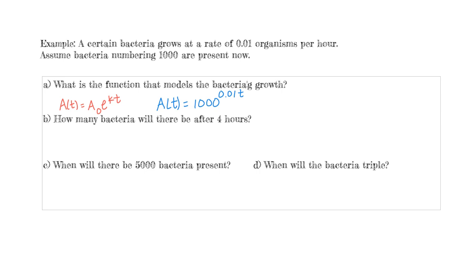For part B, it asks how many bacteria there will be after four hours. We're looking for A(4), so that's 1000·e^(0.01 × 4). When we plug that into a calculator, we get 1040.81 bacteria. So if we started with 1000 bacteria, in four hours we grow to about 1041 — it took about four hours to grow 42 bacteria.